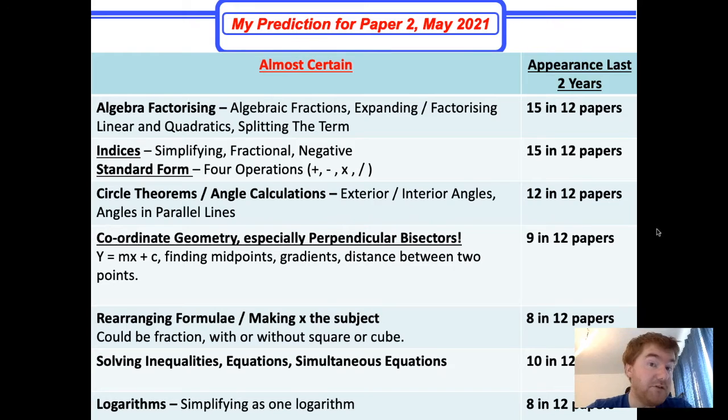Let's start with the most important, which is the almost certain part of Paper 2. This is what I've identified as topics that are almost certain to appear. On the right-hand side, I have this column for appearance in the last two years. This includes the recent November papers, May-June papers, and all three time zones. Some of these topics appear 15 in 12 papers, meaning on average there's more than one question per paper. This has changed slightly from my prediction video in 2019.